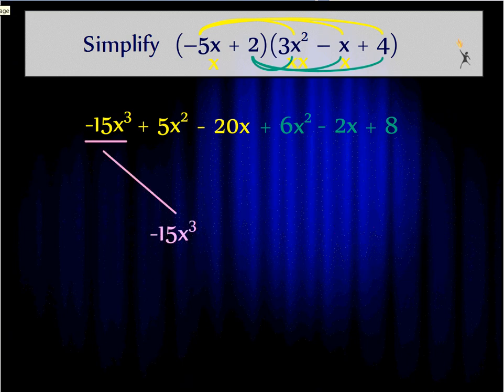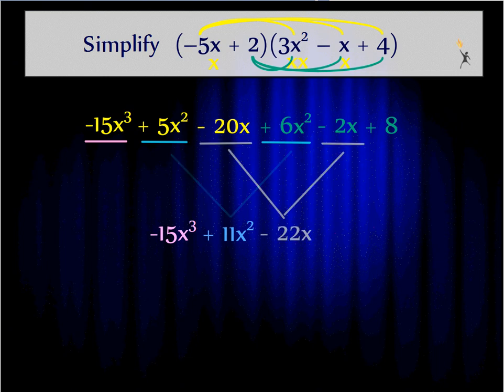The x to the third term doesn't have a like term, so it just comes straight down. I can combine my 5x squareds and my 6x squareds. That gives me 11x squareds. Remember we're back to the rules of addition where exponents don't change. Negative 20x and subtracting another 2x gives me negative 22x. And the positive 8 doesn't have a partner, so he just comes down.